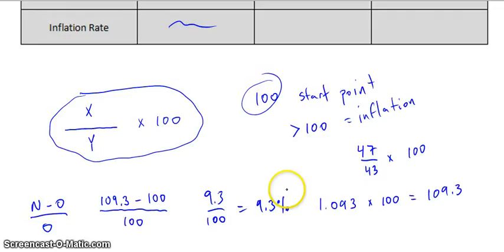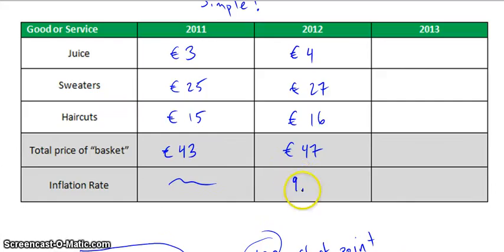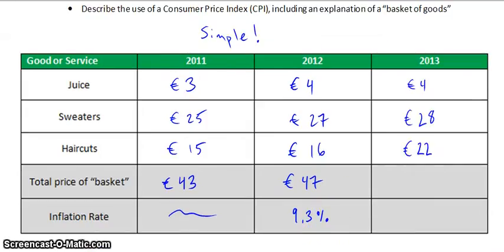Again, what's easy about that is, because it is an index number, you can just take the last two digits — that's all that's going to matter. We're going up here again, this is just 9.3%. So using the numbers that I've filled in now, what I want you to do on your own is calculate the inflation rate for 2013. Go ahead and put this on pause, and when you're done, hit play again and we'll go through the answer.